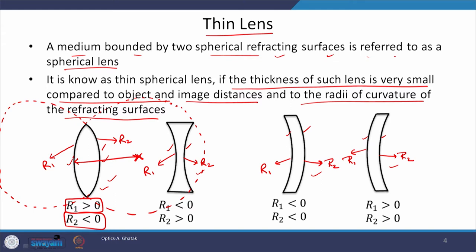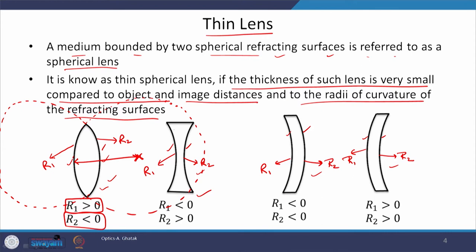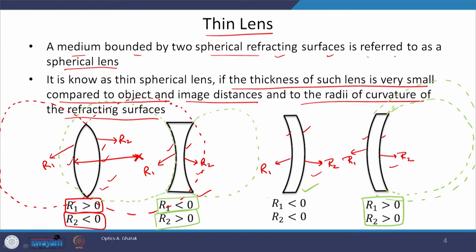We follow the same approach for all lens types. In the second case, drawing the sphere for R1 shows it appears on the left-hand side of the lens, so R1 is negative; and the second sphere appears on the right-hand side, so R2 is positive. For the third particular lens, both the first and second spheres are on the right-hand side, so both R1 and R2 are positive. While in a fourth case, both R1 and R2 are negative.